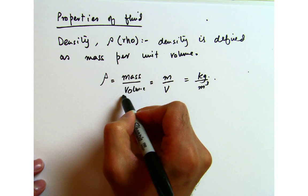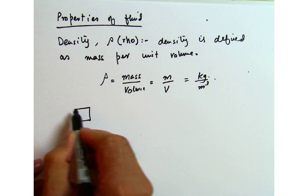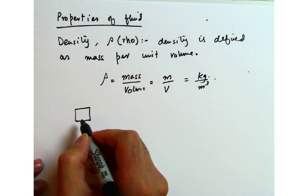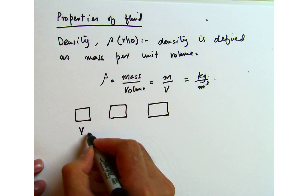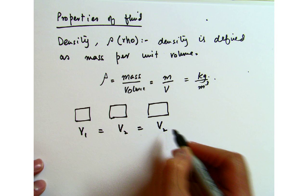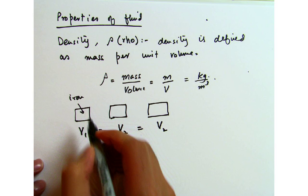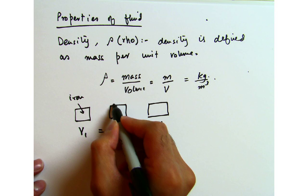For example, if I take the same volume — let's say volume V equals L cubed — and fill it with iron, water, and air. Iron will have the highest density because it occupies the greatest mass in that volume. Then water, and then air will have the lowest density. Solids generally have higher density compared to liquids, and gases have the lowest density.